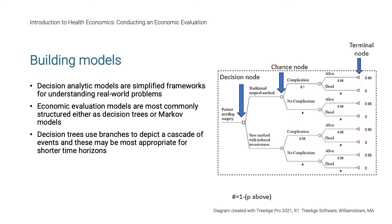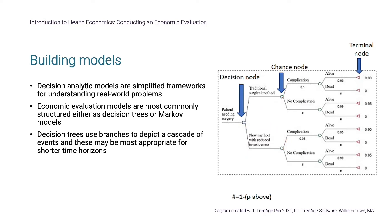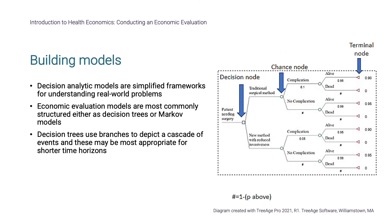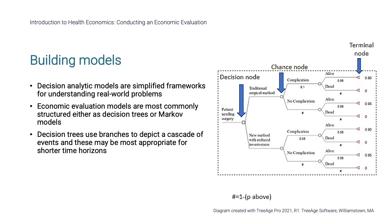Decision trees start with the decision node, from which the interventions being evaluated branch away. Next is the cascade of relevant clinical events, such as a complication, which occur at chance nodes. Costs and outcomes are calculated at each terminal node where the model ends, and are weighted by the probability of reaching that node. In the diagram, the probability of traveling down a branch is the number shown underneath the label, and the hashtag represents one minus the probability of the other branch, as the total probability must sum to one.